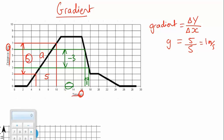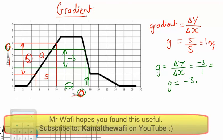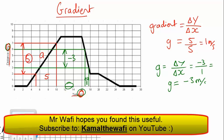Again, the formula: gradient equals change in y divided by change in x. I'm going to substitute the numbers: the change in y was minus three divided by the change in x, which is one. The gradient equals minus three. We've got meters here and seconds here, so the units will be meters per second. I hope you found this useful, and if you have any questions, you can comment. Thank you very much.